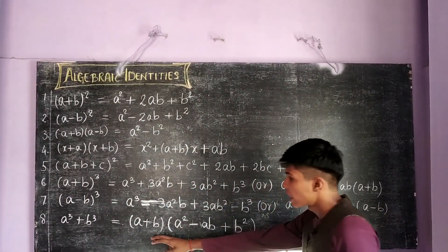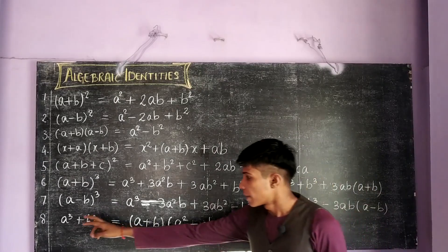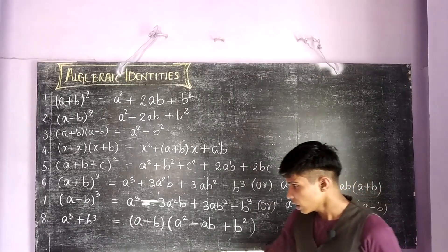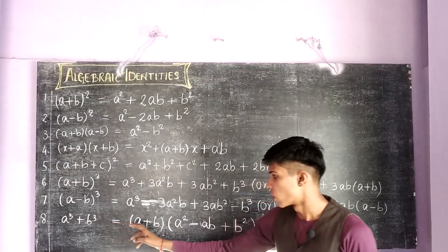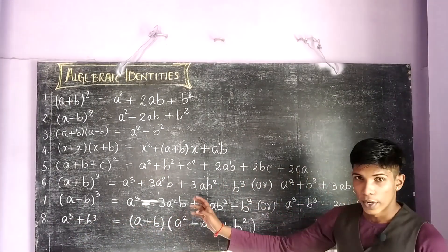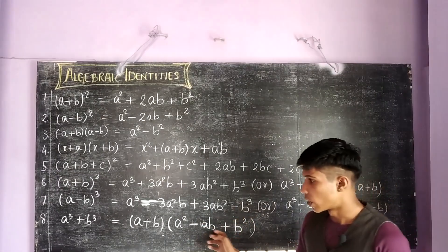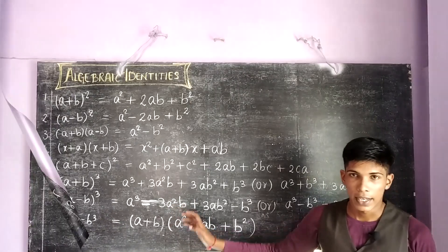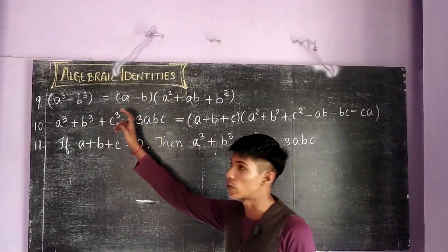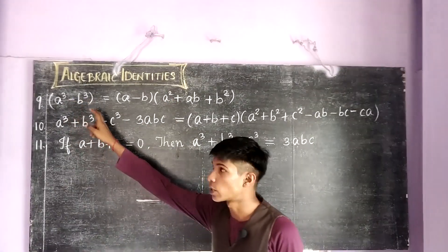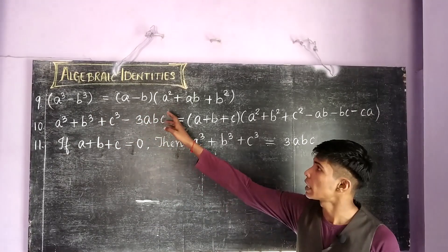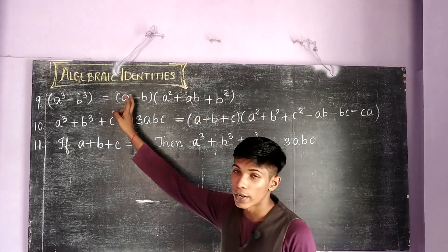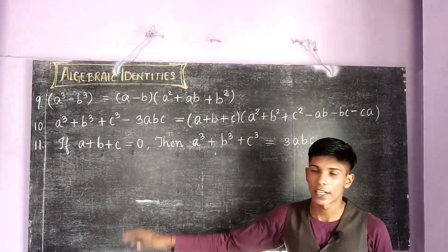The eighth identity is a cube plus b cube, which is derived from factorization. So a cube plus b cube equals a plus b into a square minus ab plus b square. This is a very important identity which we will be studying in higher classes. The ninth identity is a cube minus b cube, which equals a minus b into a square plus ab plus b square. This is also a very important identity for higher classes.